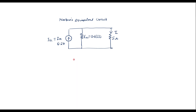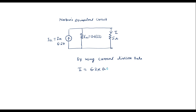Now let me calculate I using the current division rule. By the current division rule, I equals total current times the opposite resistor — the resistor opposite to the 5 ohm branch is 0.8333 — divided by the sum of resistors, that is 5 plus 0.8333. Simplifying this gives I = 0.885 amps. Therefore, current through the 5 ohm resistor I equals 0.885 amps. This is the required solution.